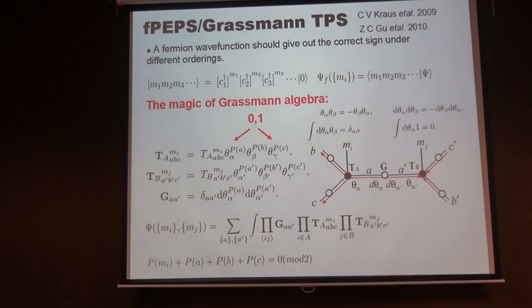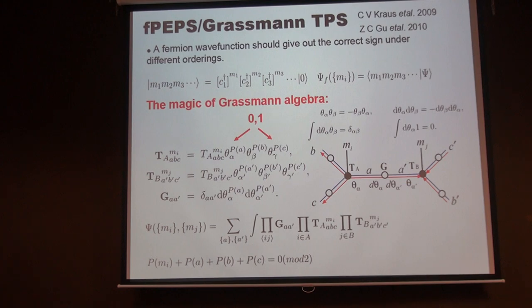To make this trick work, the metric must be placed at the very front — that is the rule. The metric is in the very front, the state follows on the right side, and finally you integrate over the Grassmann variable to get a complex number.